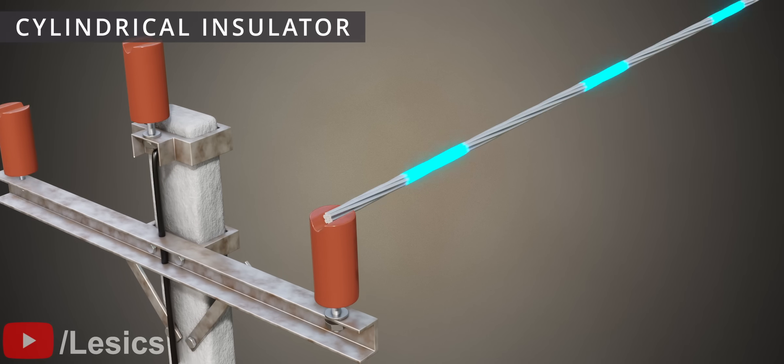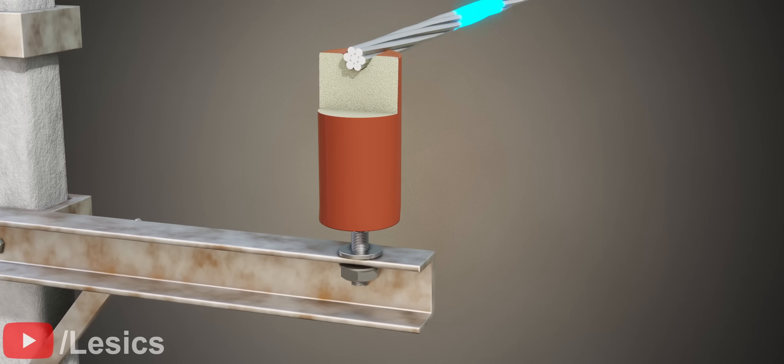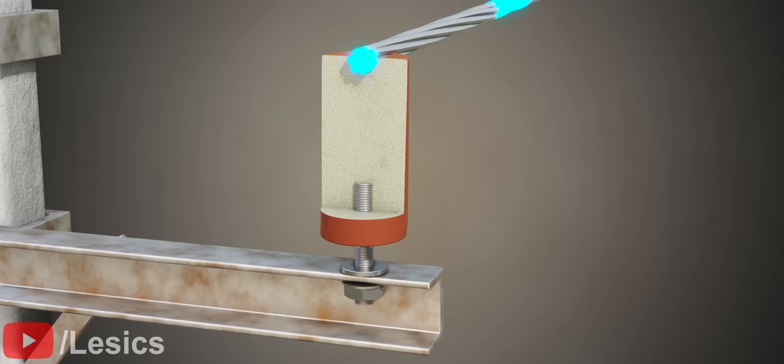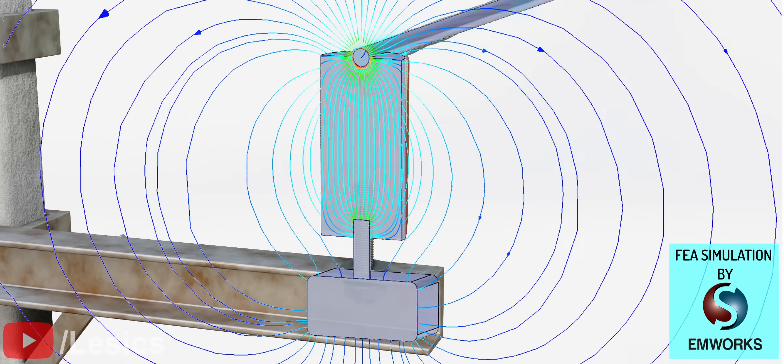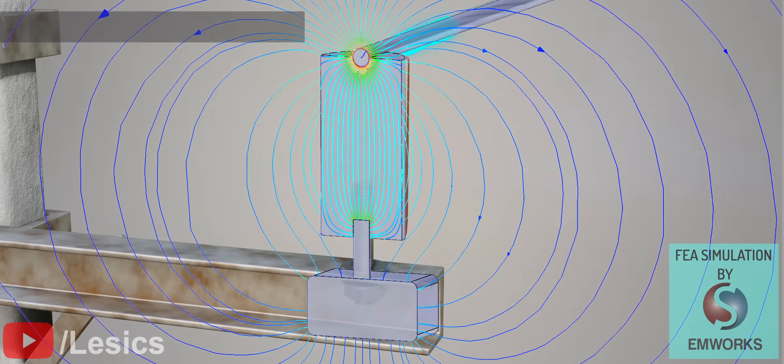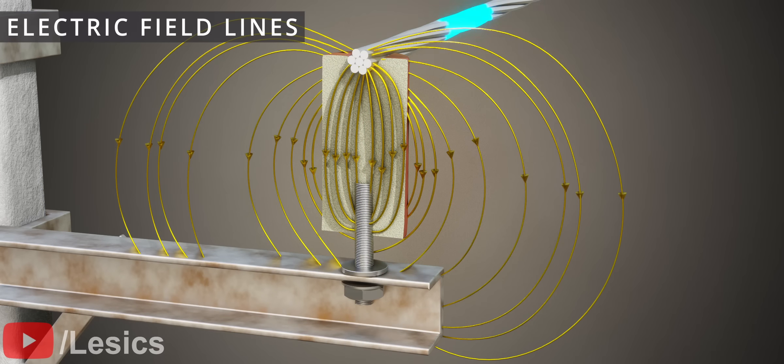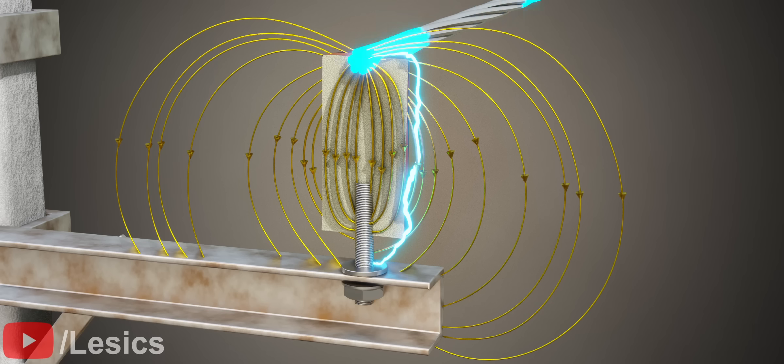However, there is a small issue. Let's study the nature of the electric field lines in this case with the help of FEA results produced by EMWorks. Here, the electric field lines pass through the insulator and air as well. You might have seen that all the electrical flashovers occur through the air. Hence, let's examine the air's electric field in detail.